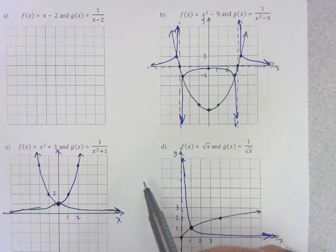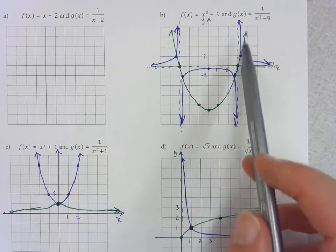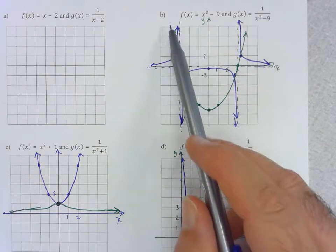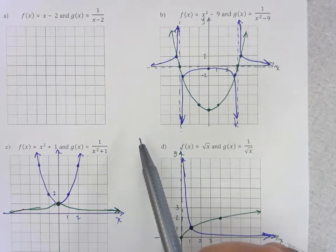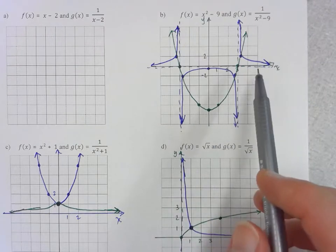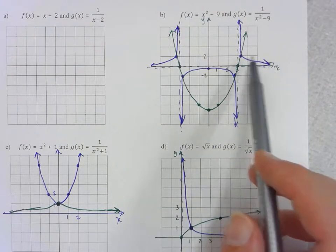Okay, the second thing we saw was that we could use the end behavior of the original function to determine the end behavior of the reciprocal function.